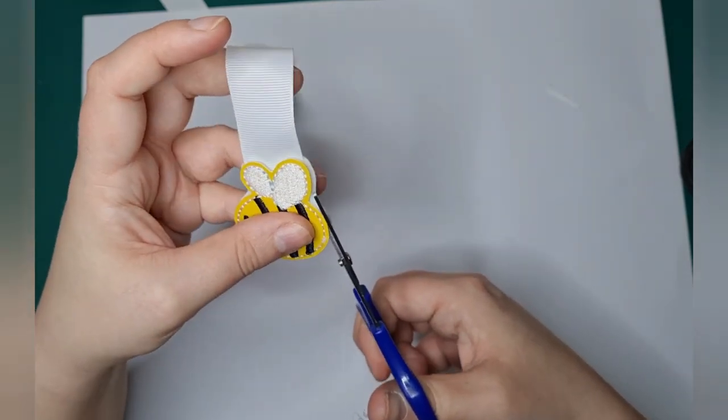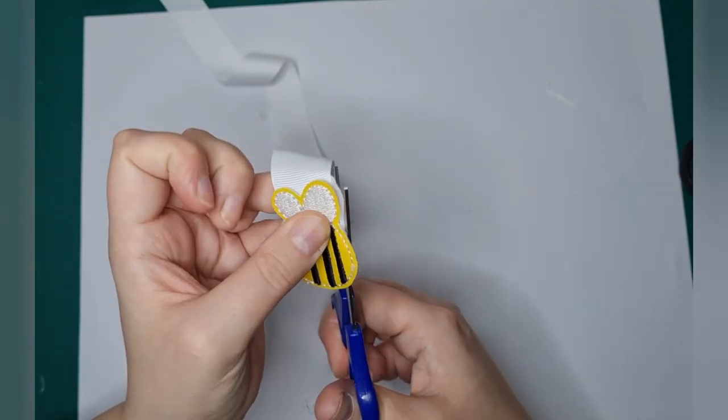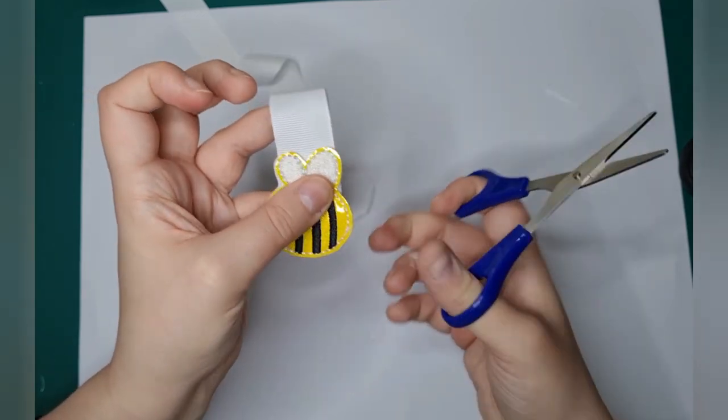Don't cut your feltie. We are purely cutting the felt that is underneath. Also don't cut your ribbon here.